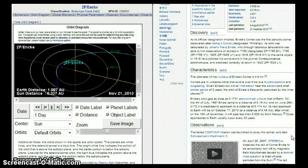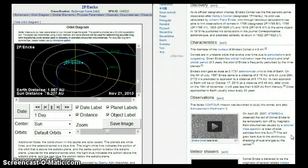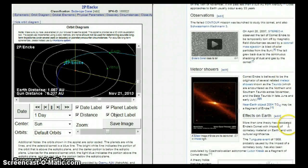Comets are in unstable orbits that evolve over time due to perturbations and outgassing. Given Encke's low orbital inclination near the ecliptic and the brief orbital period of three years, the orbit of Encke is frequently perturbed by the inner planets.